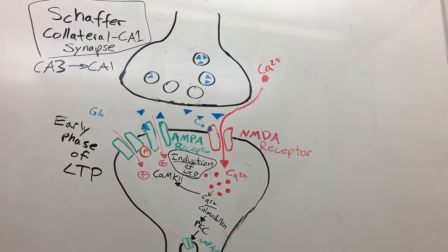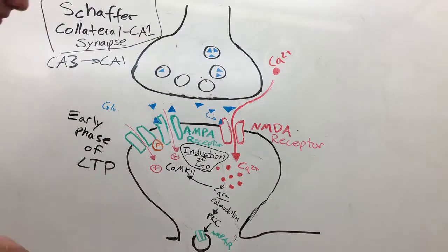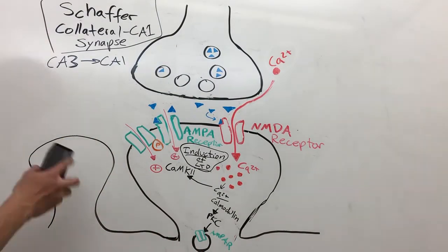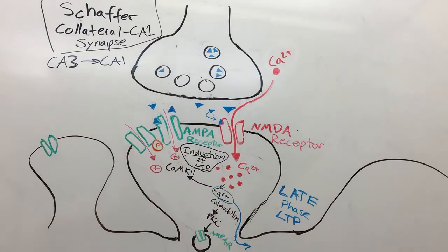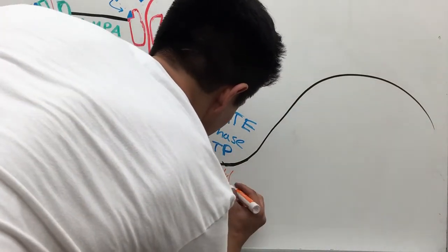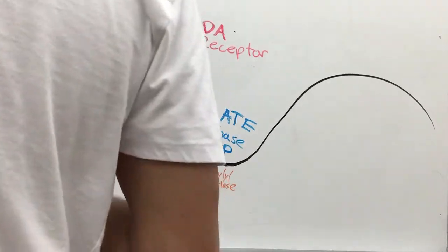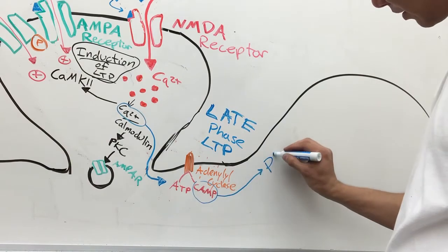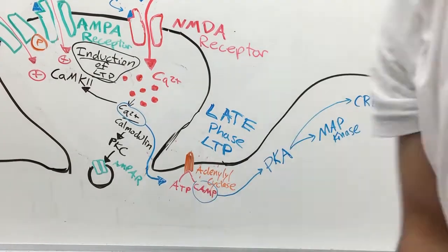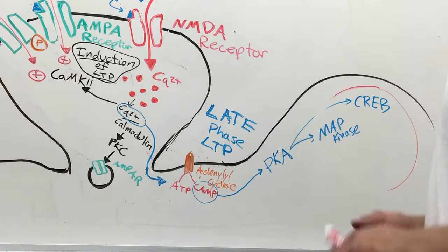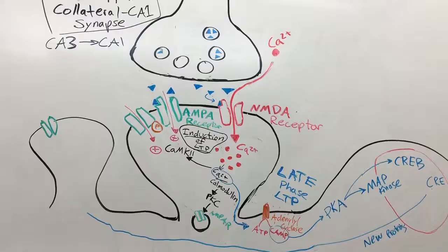That is the early phase of LTP. When we get into the late phase, we're going to be talking about what's going to happen throughout the whole neuron and the creation of new proteins to create more receptors. In the late phase, we have calcium going into another pathway to adenylyl cyclase. Adenylyl cyclase will make cyclic AMP or cAMP, and cAMP will go into PKA, which will go to MAP kinase, which will go into the CREB cycle in the nucleus of the neuron, and that will lead to the creation of more proteins for the rest of the neuron to use.